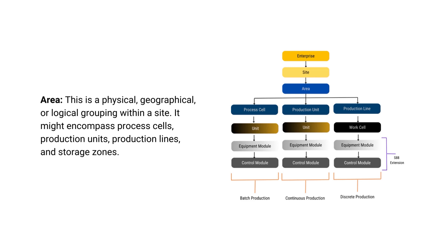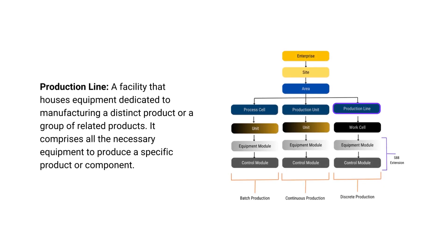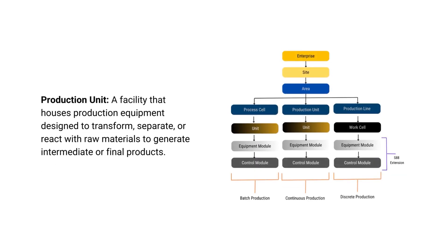The area might encompass process cells, production units, production lines, and storage zones. The production line: a facility that houses equipment dedicated to manufacturing a distinct product or a group of related products. It comprises all the necessary equipment to produce a specific product or component.